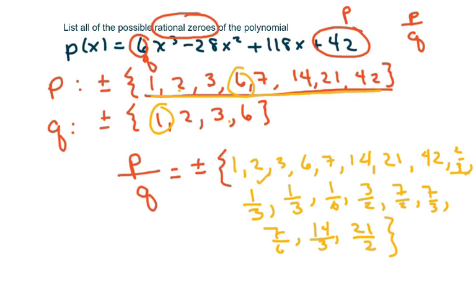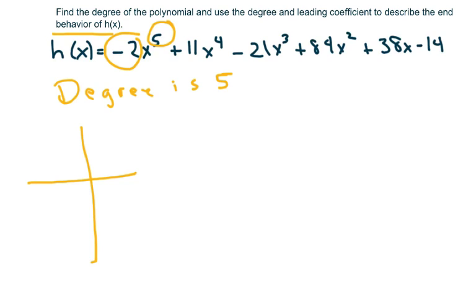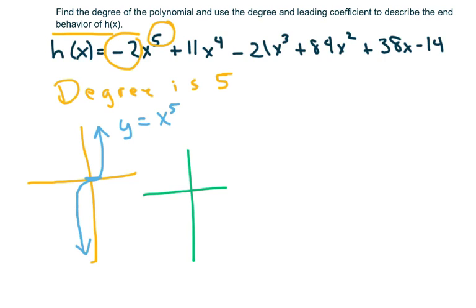The next one: find the degree of the polynomial, which is 5, and the leading coefficient, which is negative 2. To describe the end behavior, I look at the parent power function y equals x to the fifth — it shoots up steeply. Since our leading coefficient is negative, it reflects, so it comes down on the right and goes up on the left.